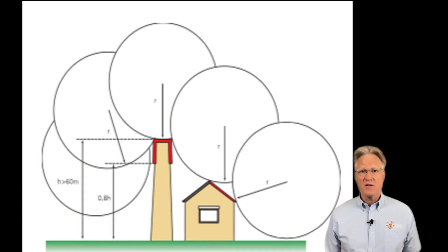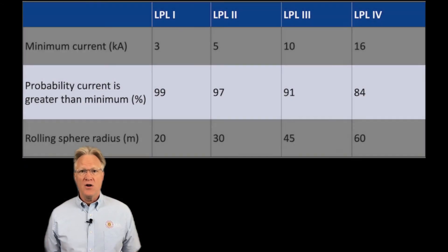The higher the protection, the smaller the sphere, and naturally the higher the cost of the system since more lightning rods are needed. Note the minimum charge protected against. Each level of protection really has a range of protection and they don't start at zero.